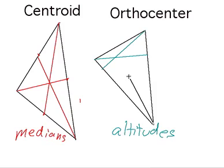And lastly, we're going to take an altitude from the third vertex. And it needs to make a right angle with the base. And this point right here, where the three altitudes meet, is called the orthocenter.